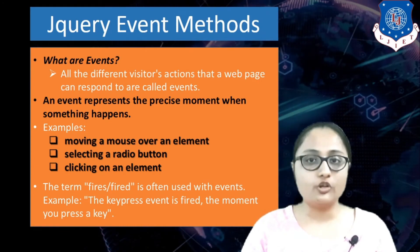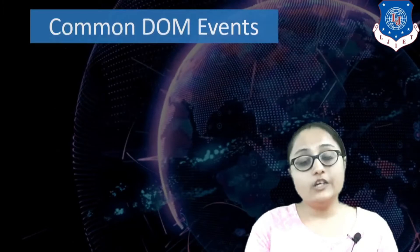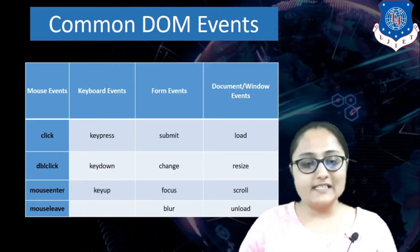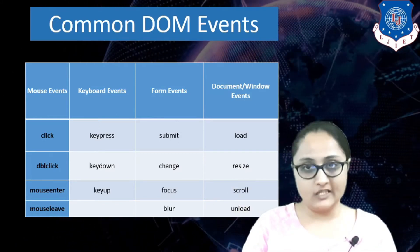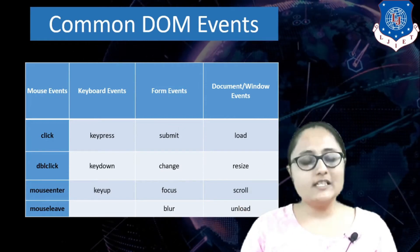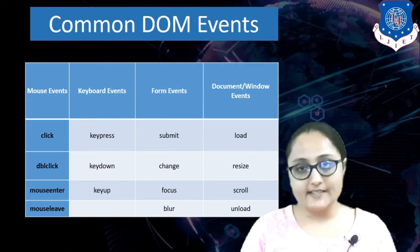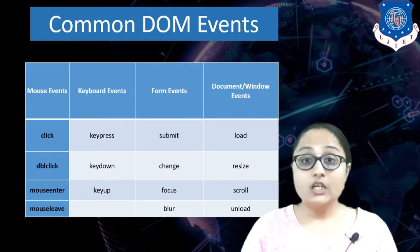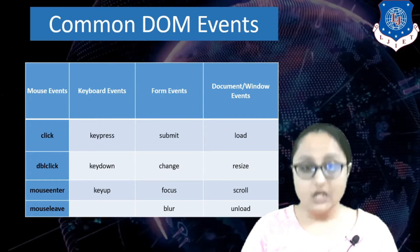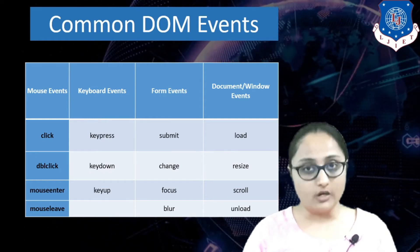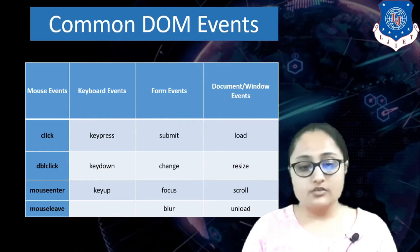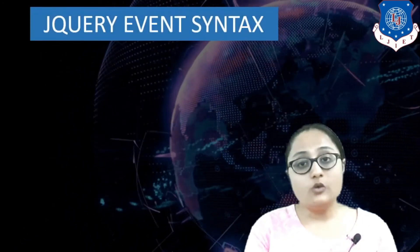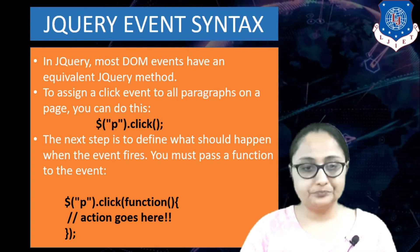Now, when talking about events in jQuery, what are the common DOM event categories? There are four: mouse events, keyboard events, form events, and document events. Mouse events include click, double click, mouse enter, and mouse leave. Keyboard events include key press, key down, and key up. Form events include submit, change, focus, and blur. Document events include load, resize, scroll, and unload. These are all the events you can handle using the Document Object Model.